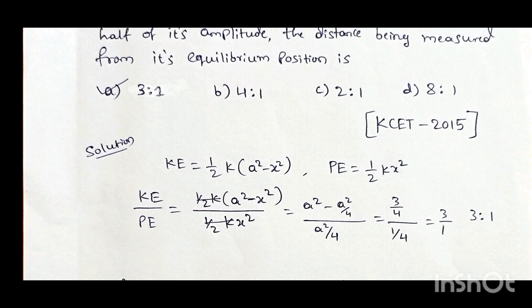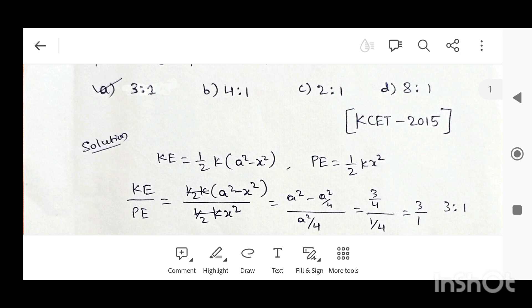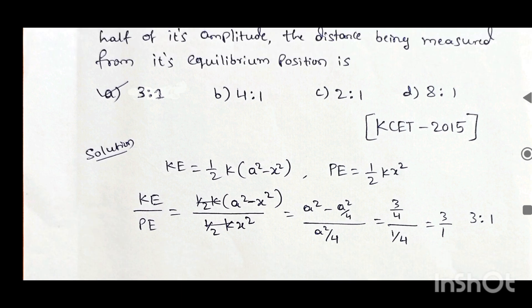Since X equals half the amplitude, substituting X = A/2 gives (A² - (A/2)²) / (A/2)², which simplifies to (A² - A²/4) / (A²/4). Taking A² common, the value becomes (3/4) / (1/4), so 4 cancels and we get 3:1. The correct answer is option A.